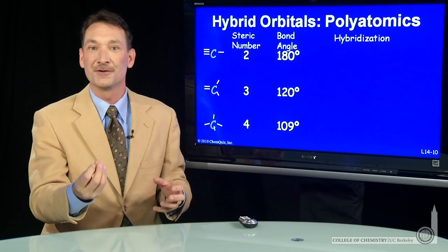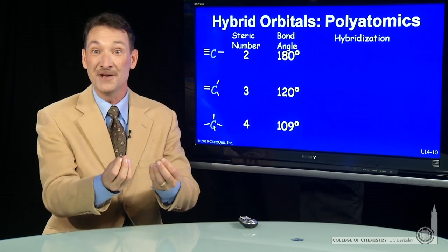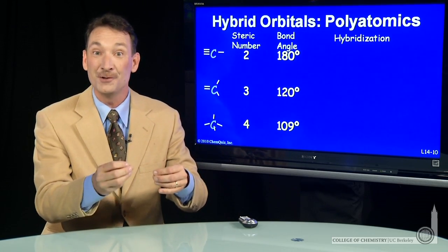Just like a hybrid car is a mixture of gas and electric, I can make a mixture of an S and P orbital to create an SP orbital that has new properties.